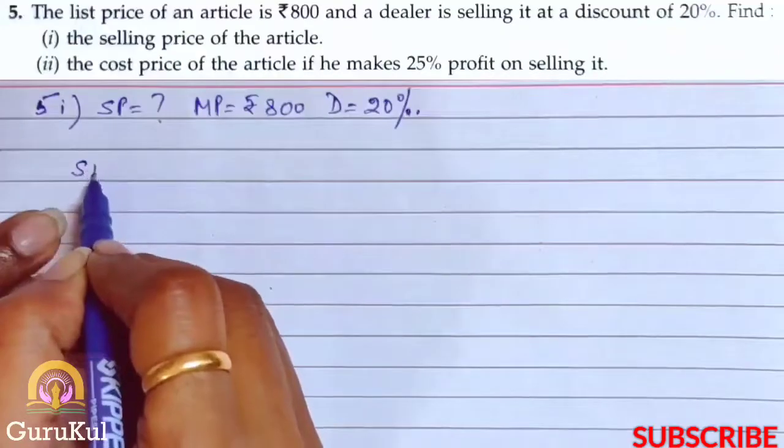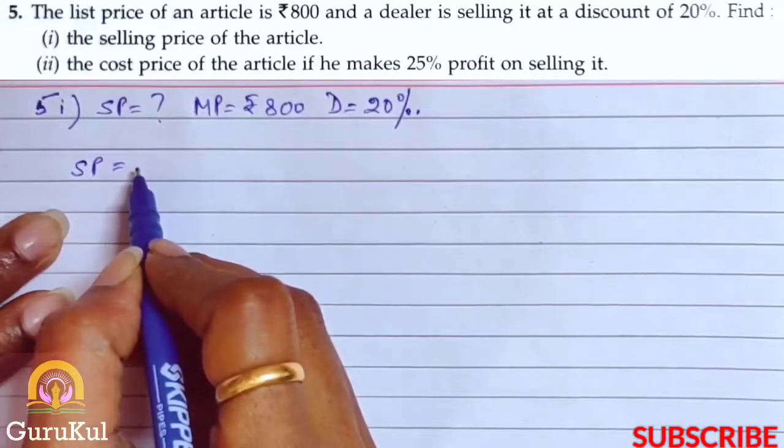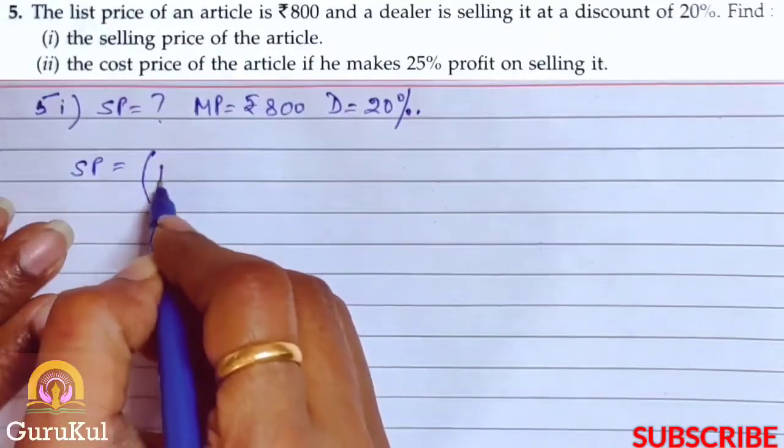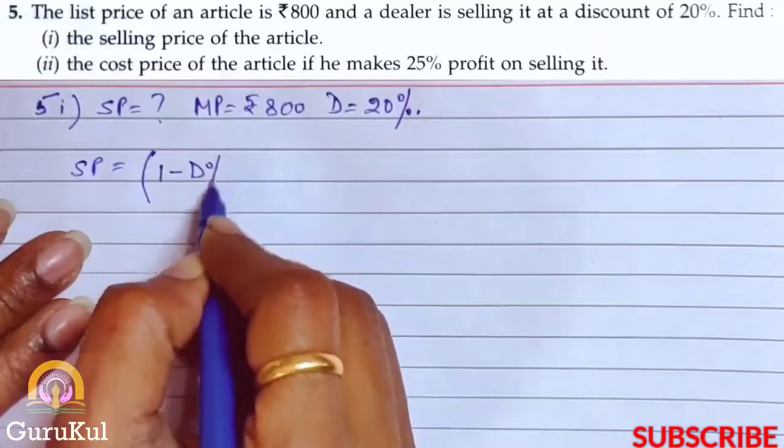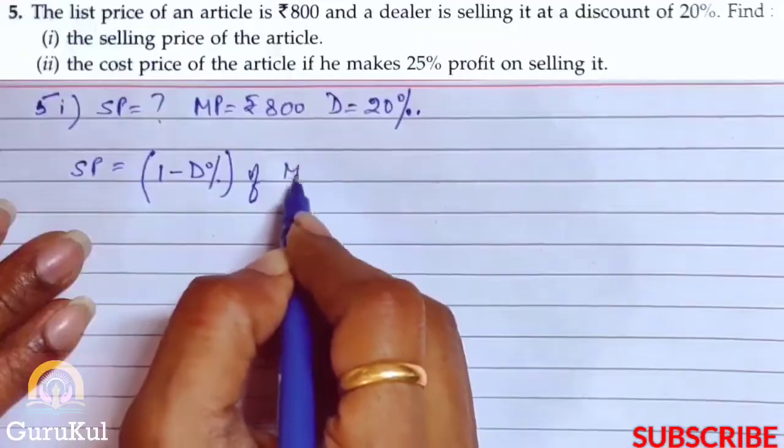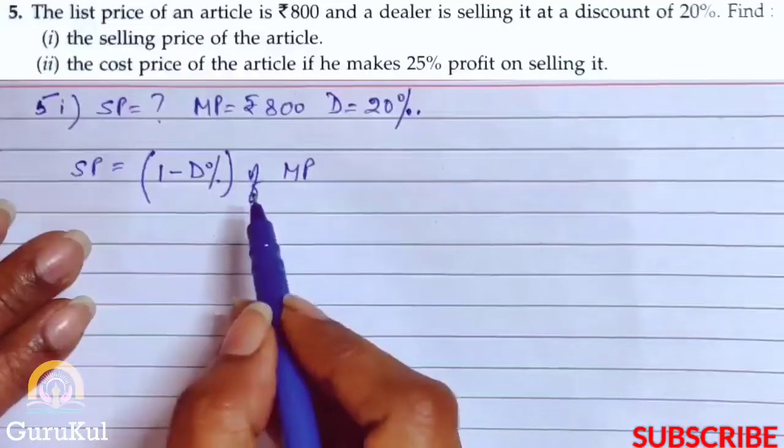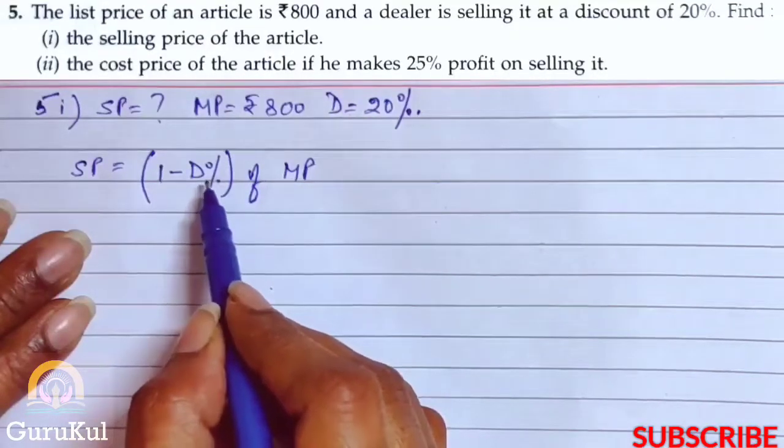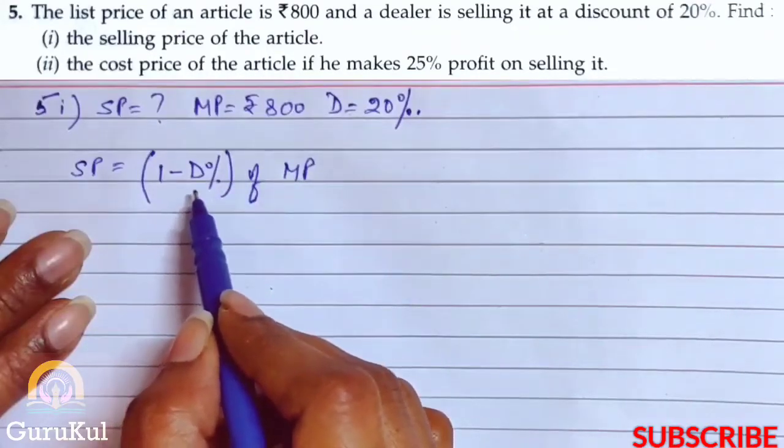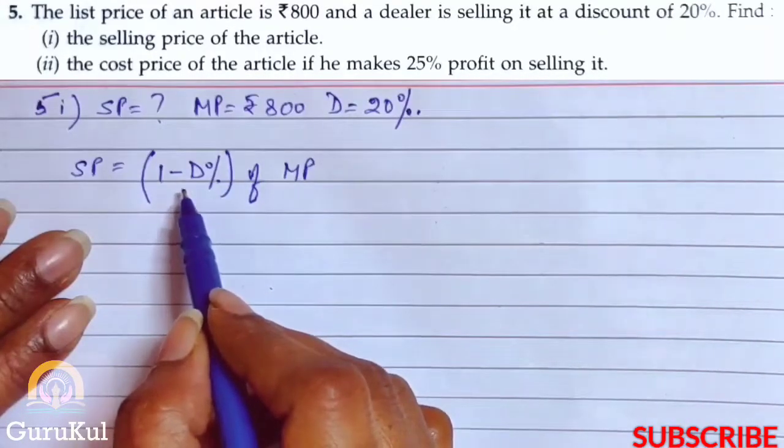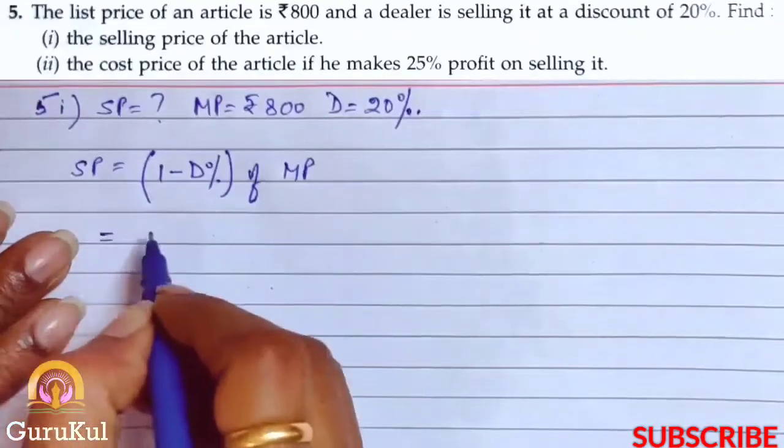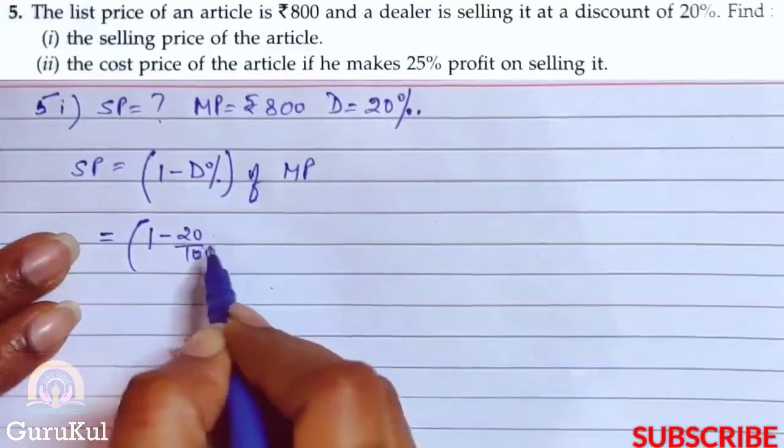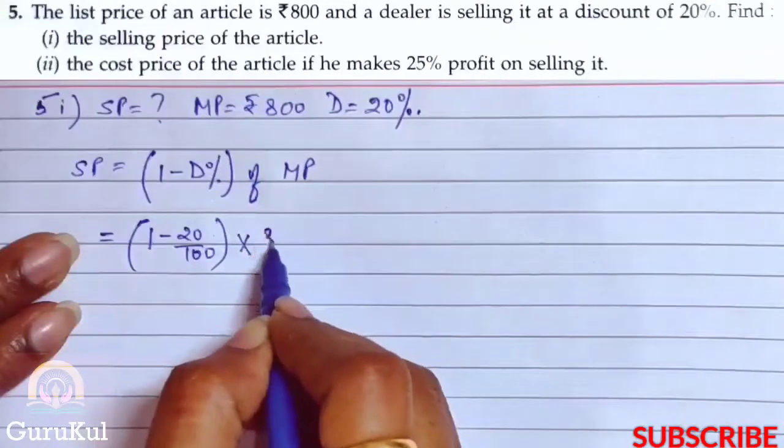Now in order to find the selling price, remember the formula. So it is selling price equals open bracket 1 minus discount percent by 100 bracket closed of marked price. The discount is minus because we are reducing the price.